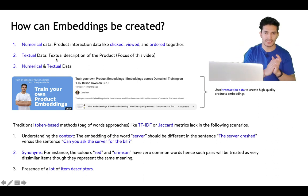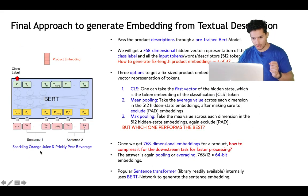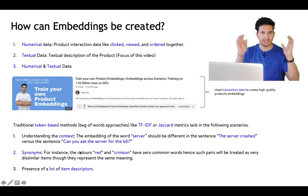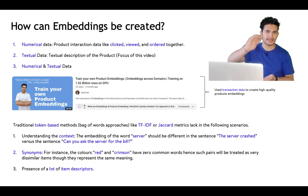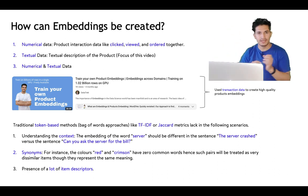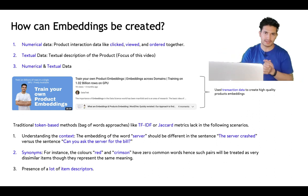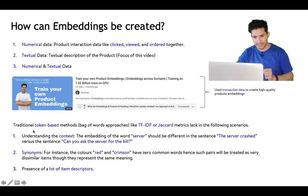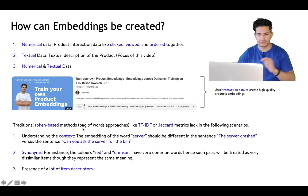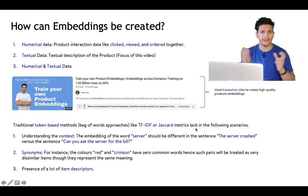In this video we will focus on the textual approach: given a textual description like 'sparkling orange juice' or 'prickly pear beverage,' how can we generate embeddings for all items? Before jumping into the code, let's understand why traditional token-based methods like Bag-of-Words, TF-IDF, or Jaccard similarity don't do as good a job as embeddings.